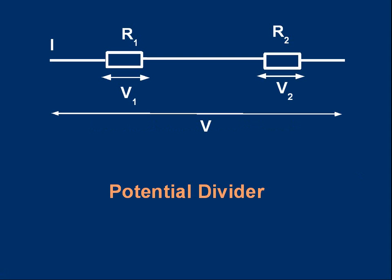To make a potential divider, you simply need two resistors in series. If you provide an overall voltage V across the pair of resistors, the voltage gets split or divided into two smaller voltages, V1 and V2. And V1 and V2 add to give the original voltage.